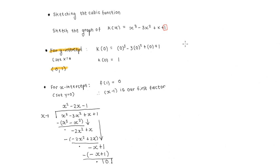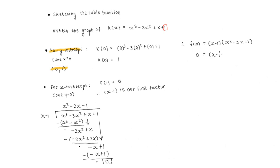Once we've received our quadratic factor, we now know that f(x) can be written as our first factor (x − 1) times the quadratic factor, which is x squared minus 2x minus 1. Now this specific quadratic can't be factorized into two factors, so we are going to have to use the quadratic formula. We are looking for x-intercepts, so we set 0 equal to (x − 1) times (x squared minus 2x minus 1).